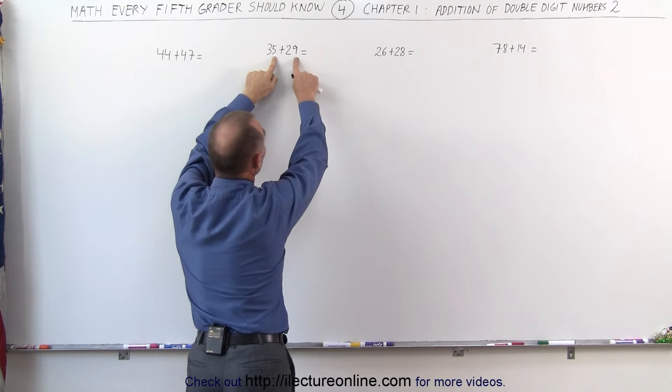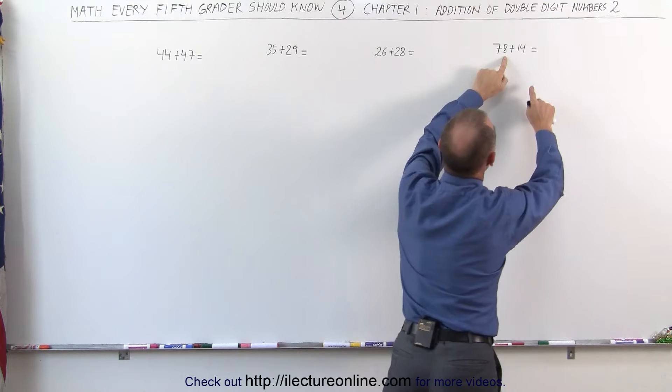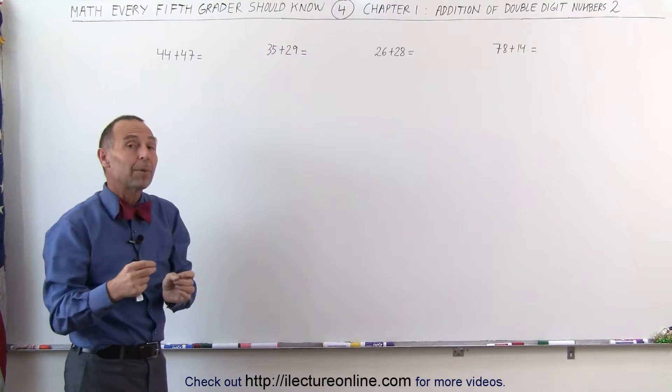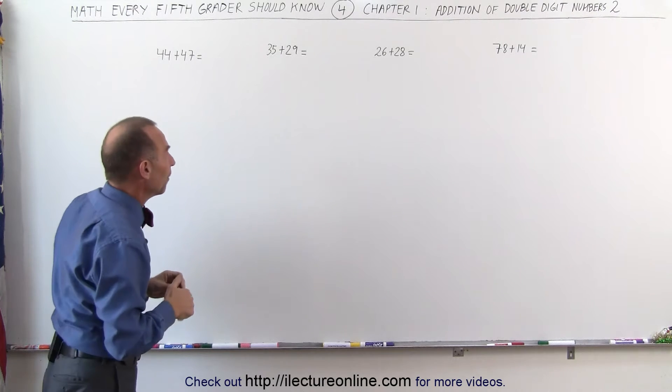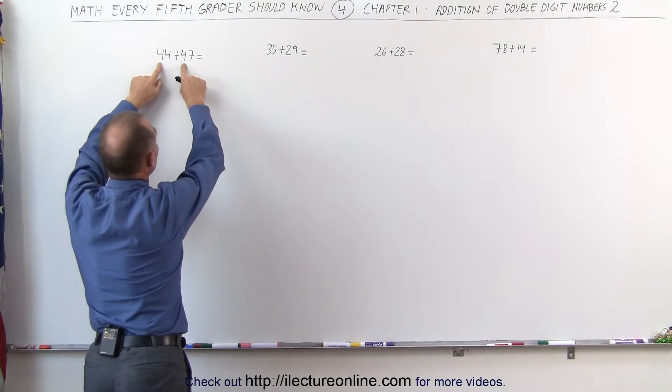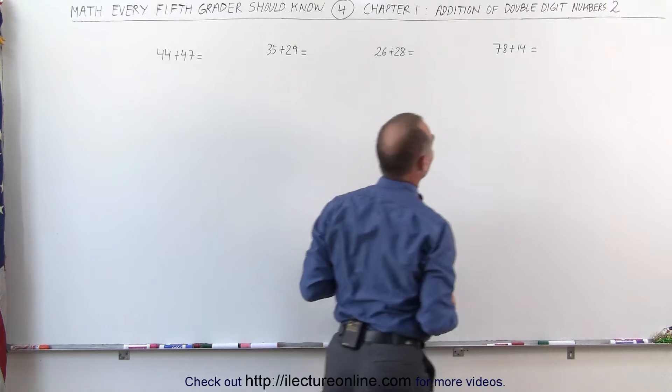If you add 5 plus 9, that gives you a number bigger than 10. Add 6 plus 8, that's a number bigger than 10. And add 8 plus 4, that's a number bigger than 10. If you look at the first digits on both numbers, then you add those together, you get a number less than 10. In all cases, that is correct.